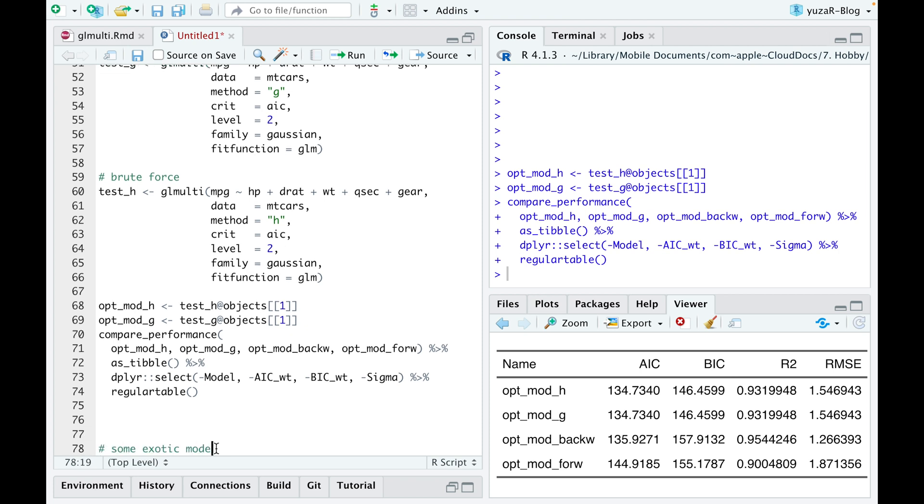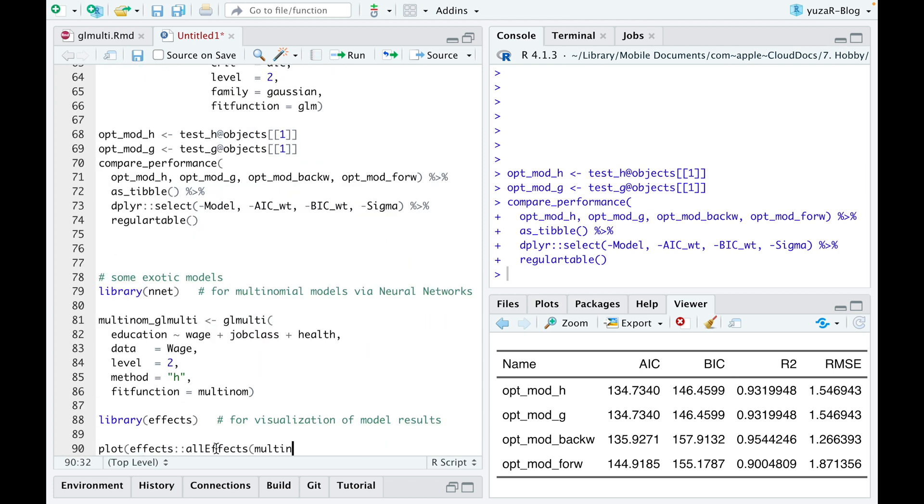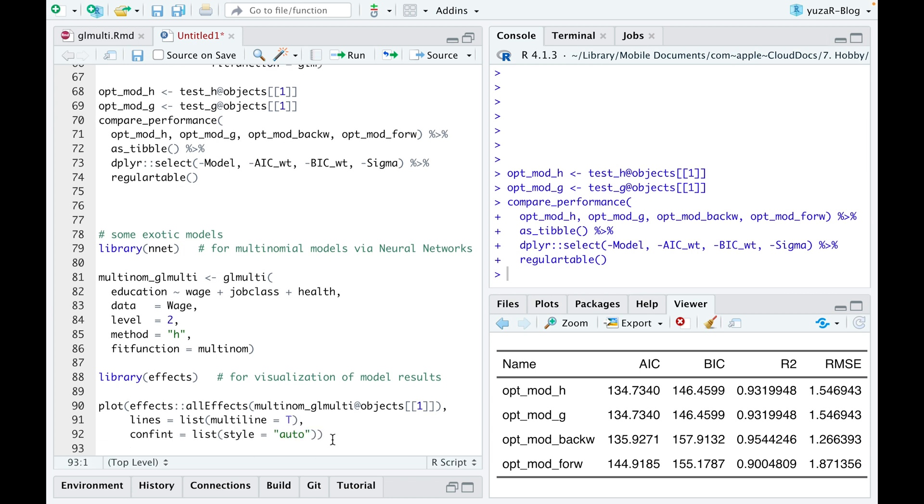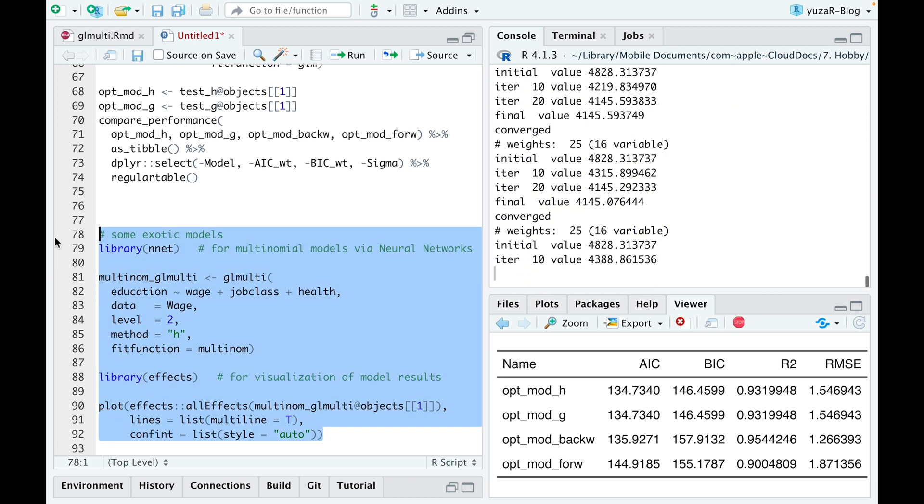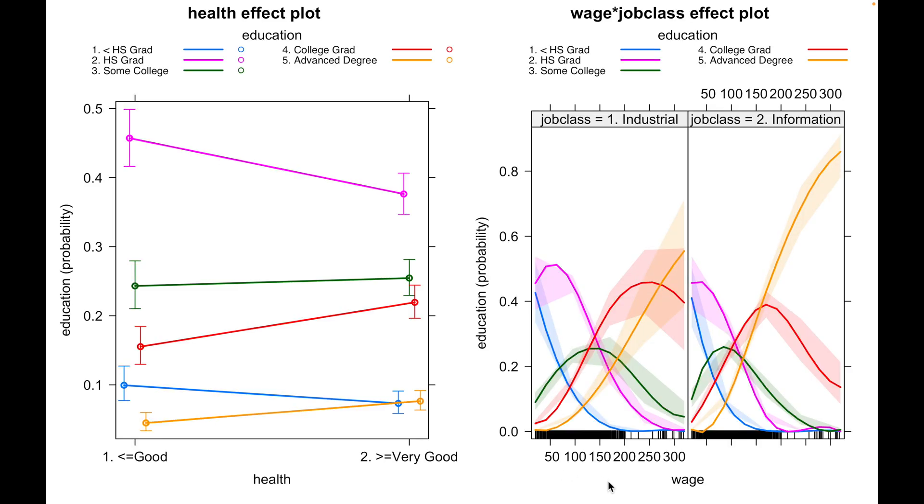And while glmulti works fine with the classic functions like LM and glm, it can also fit some exotic models, such as multinomial models via neural networks from NNET package. Here are the predictions of the best multinomial model.